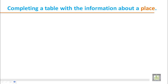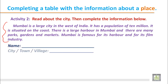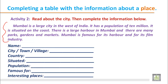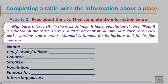Activity 2: Read about the city, then complete the information below. Here is a paragraph about a city. You are going to read the paragraph and complete a table. The city is Mumbai. Mumbai is a large city in the west of India. It has a population of 10 million, is situated on the coast, has a large harbour, many parks, gardens, and markets, and is famous for its harbour and film industry.